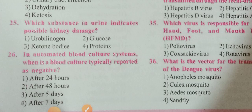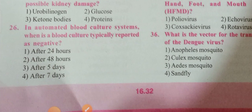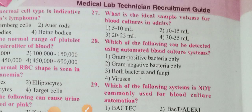Question 25: Which substance in urine indicates possible kidney damage? Option 4 is the correct answer — proteins. Question 26: In automated blood culture systems, when is a blood culture typically reported as negative? Option 3 — after 5 days.